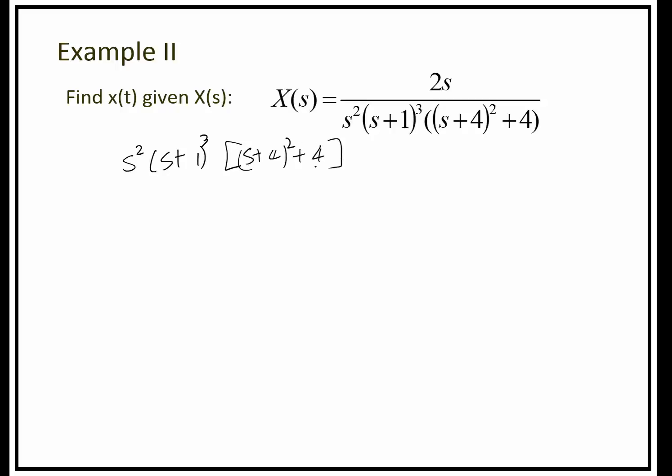Sometimes they may not come out in this very clean form. You have to do some algebraic manipulation to get them in this clean form. We have three groups of poles. The first group has a double pole at s equal to zero. The second group has a triple pole at s equal to minus 1. This last group has a complex pole at s equal to negative 4 plus or minus 2i.